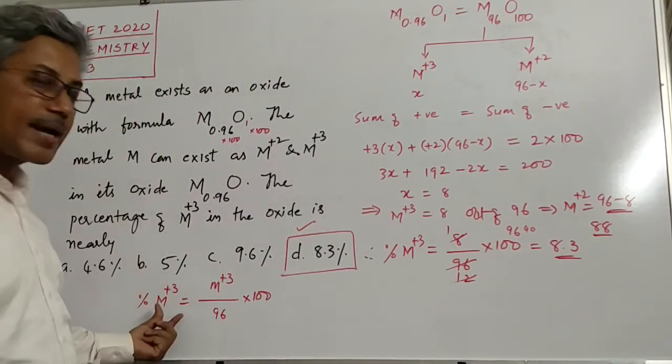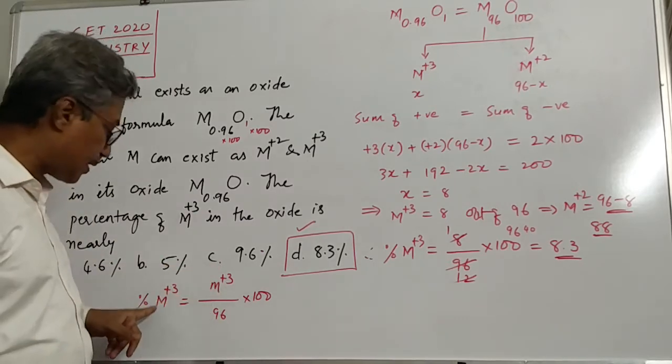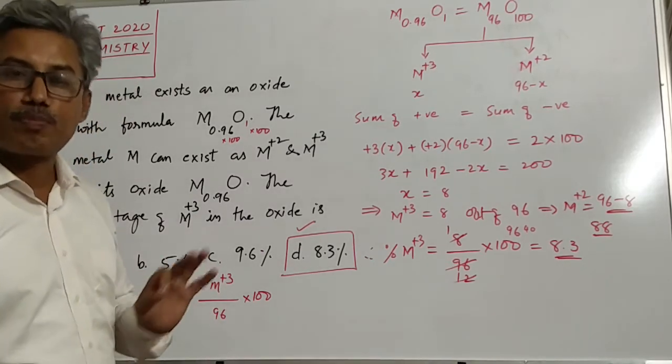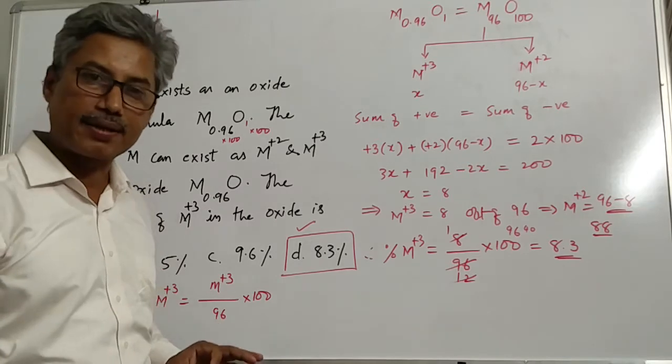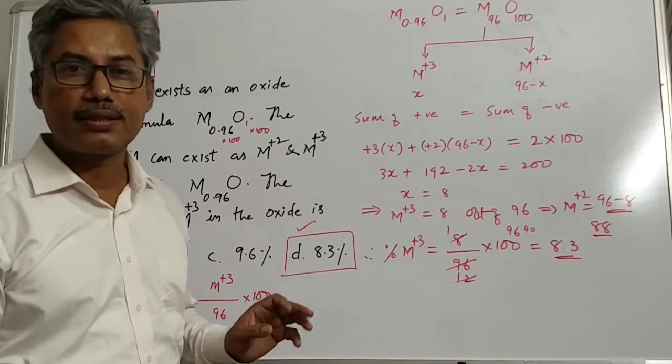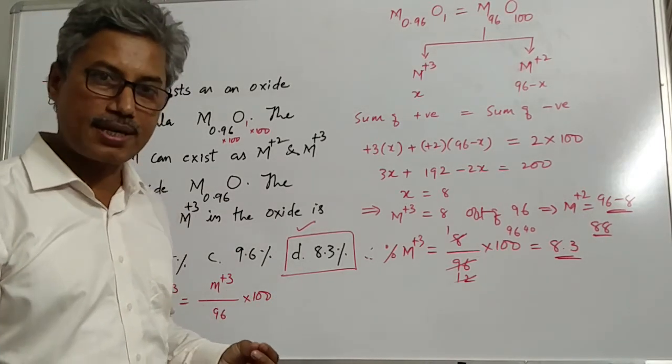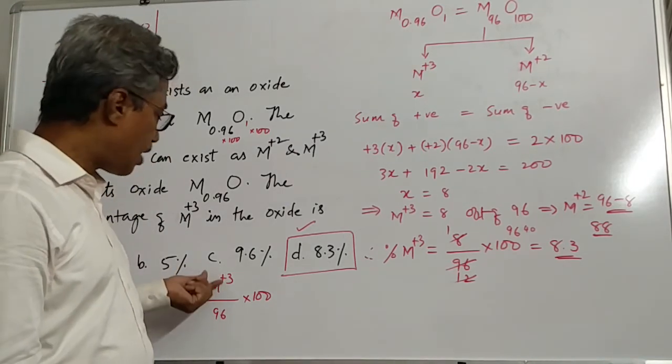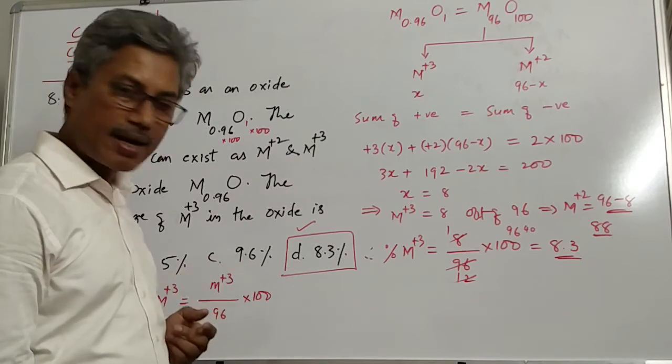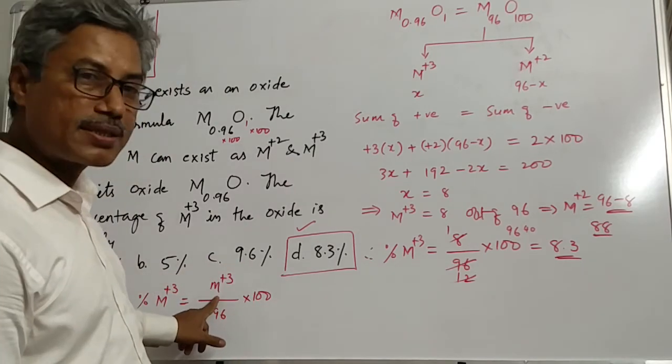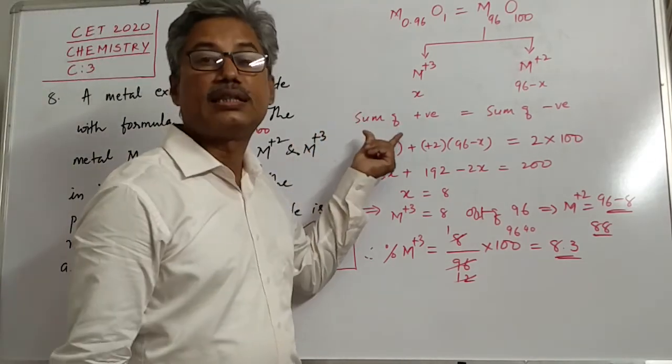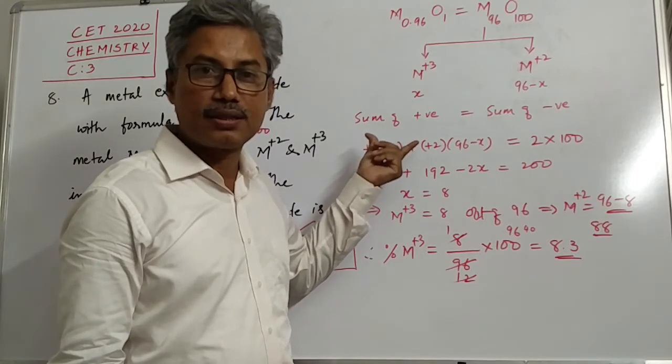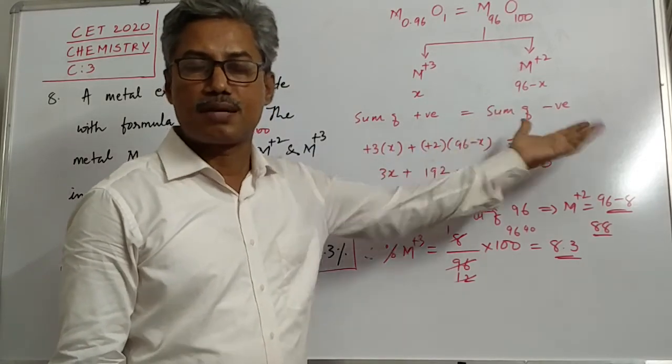What we have done is, just look at this. What we need to calculate? Percentage of M plus 3. So percentage of M plus 3 can be calculated just by knowing how many M plus 3 ions are present out of total. Total is in the denominator and how many are there in the numerator, multiplied by 100. And how to calculate how many M plus 3 ions are there? This formula: sum of the positive charges of metals must be equal to sum of the negative charges.